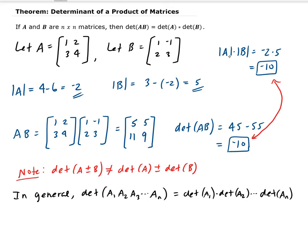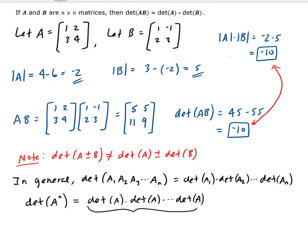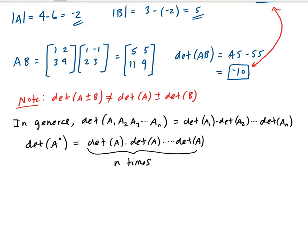You can extend this for more than two matrices. Also, if you have the determinant of A to the power N, this equals the determinant of A times the determinant of A, repeated N times — because A to the N is A times A times A, N times. Using the theorem, this result is the same as taking the determinant of A and raising it to the power N.